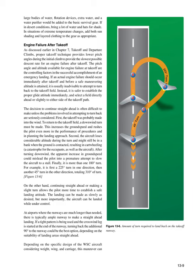Engine failure after takeoff: As discussed in Chapter 7, proper takeoff technique provides lower pitch angles during the initial climb to provide the slowest possible descent rate for an engine failure after takeoff. The pitch angle and altitude available for engine failure at takeoff are the controlling factors in successfully accomplishing an emergency landing. If an actual engine failure should occur immediately after takeoff and before a safe maneuvering altitude is attained, it is usually inadvisable to attempt to turn back to the takeoff field. Instead, it is safer to establish the proper glide attitude immediately and select a field directly ahead or slightly to either side of the takeoff path.